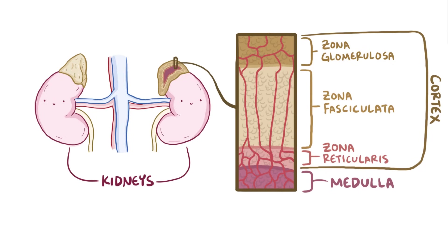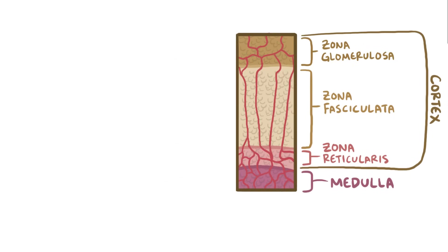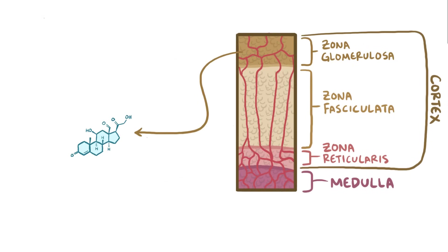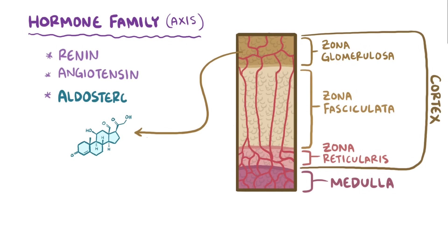The outermost layer is the zona glomerulosa, and it's full of cells that make the hormone aldosterone. Aldosterone is part of a hormone family, or axis, which work together and are called the renin-angiotensin-aldosterone system.